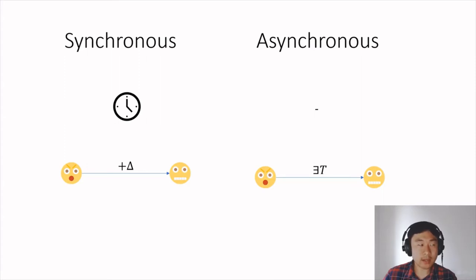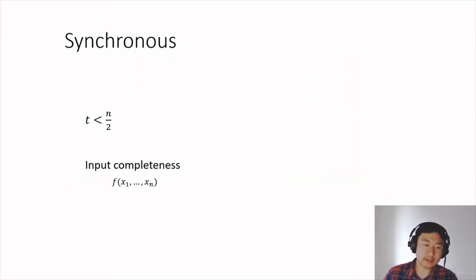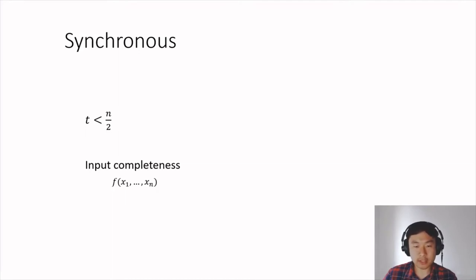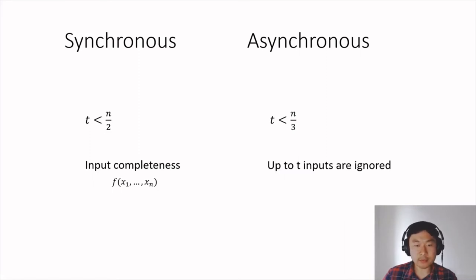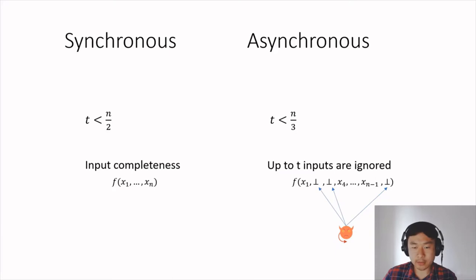So, why do we design synchronous protocols? One of the main reasons is that they achieve very strong security guarantees. Assuming standard setup assumptions, synchronous MPC protocols can tolerate up to t < n/2 corruptions and allow every party to give input. In contrast, asynchronous MPC protocols can only tolerate up to n/3 corruptions, and unavoidably, the inputs of up to t parties are ignored. Formally, this means that the adversary can choose up to t inputs and substitute them by a default value ⊥ before the output is computed.